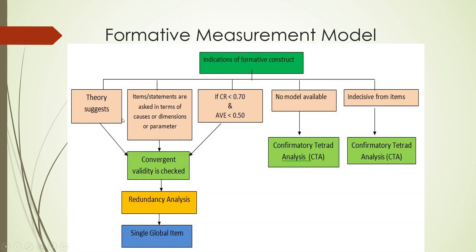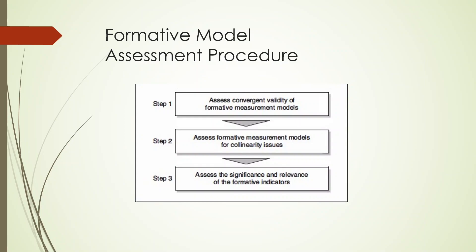In scenarios 1, 2, and 3, you will have to check convergent validity by redundancy analysis, which is carried out using a single global item. In the 4th and 5th scenarios, where no model is available or items are indices, we carry out confirmatory tetrad analysis.